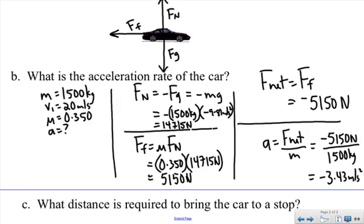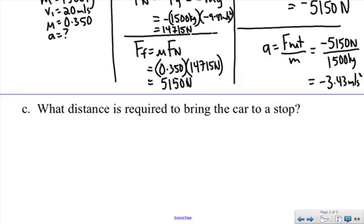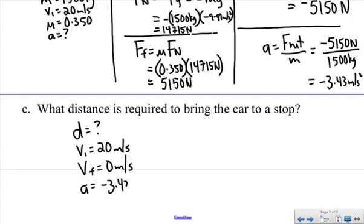So now I'm going to find the distance required to bring the car to a stop. And here I'm going to rely on some kinematics from chapter one. So I'm trying to find what distance is required to stop the car. I know from the original question the velocity is 20 meters per second to start with. If I'm coming to a stop, my final velocity is 0 meters per second. And I just figured out that my acceleration rate is negative 3.43 meters per second squared. So if I look at my listed information, the equation that comes to mind is VF squared equals VI squared plus 2AD.